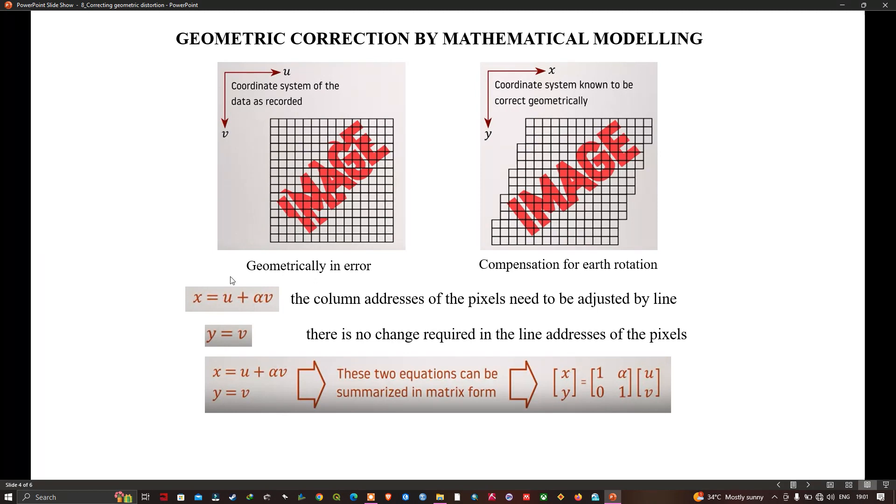The value of alpha depends on the platform orbital properties and the location at which the image was recorded.